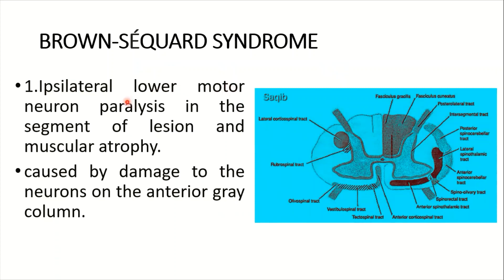Number one: ipsilateral lower motor neuron paralysis in the segment of the lesion and muscular atrophy. This is the damage to the neurons in the anterior gray column. This damage leads to ipsilateral lower motor neuron paralysis in the segment of the lesion.